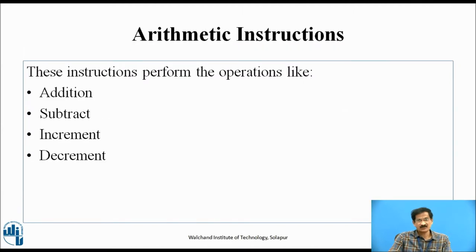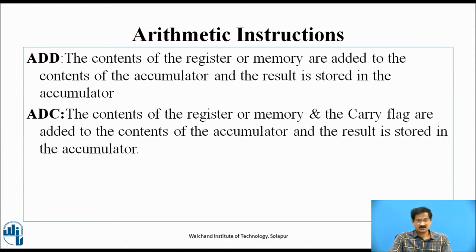Arithmetic instructions perform operations like addition, subtraction, increment, and decrement. ADD: The contents of the register or memory are added to the contents of the accumulator and the result is stored in the accumulator. ADC: The contents of the register or memory and the carry flag are added to the contents of the accumulator and the result is stored in the accumulator. The difference is that ADC includes the carry flag in the addition, whereas ADD does not.